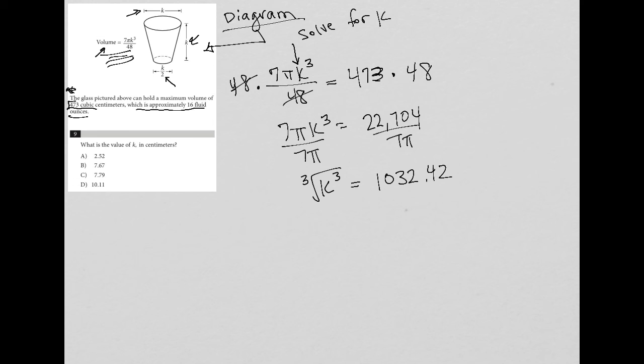I am going to cube root. Cube root crosses out the cube there, leaving me with just K. So I need to cube root this solution here. So let's do that. And what I'm getting is 10.11. And I see that value here, which is answer choice D.